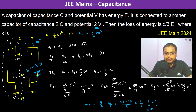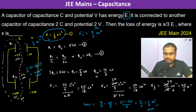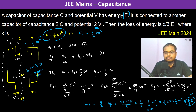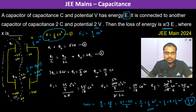Since the initial energy E equals half CV², we can write 1/3 CV² as 1/3 into 2 into half CV², which equals 2/3 E. Therefore, the loss of energy is 2/3 E.